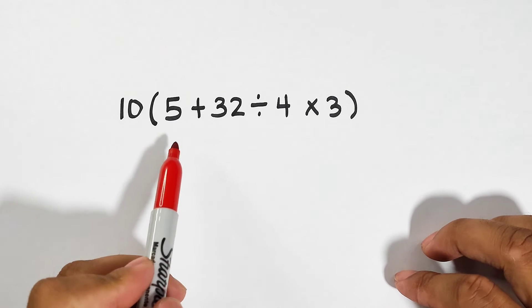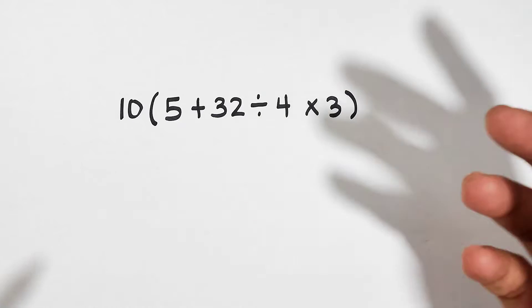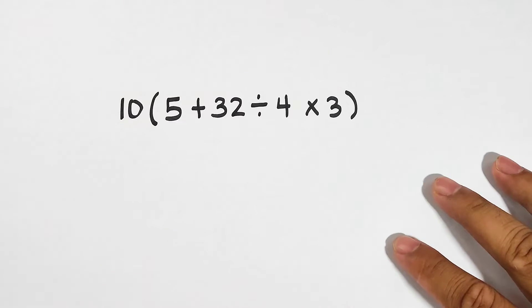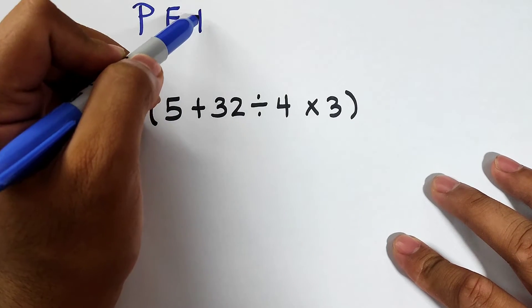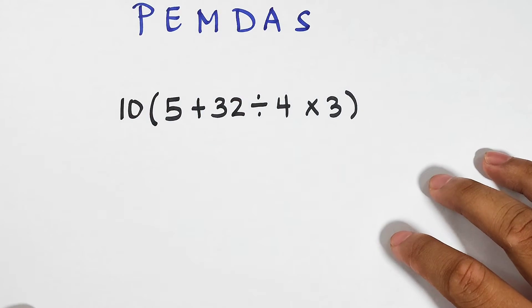At first, if you are not knowledgeable about the order of operations, you will start first with 5 plus 32 divided by 4 and then times 3. Now let me give you an idea on how we are going to simplify this. Let me give you the PEMDAS.